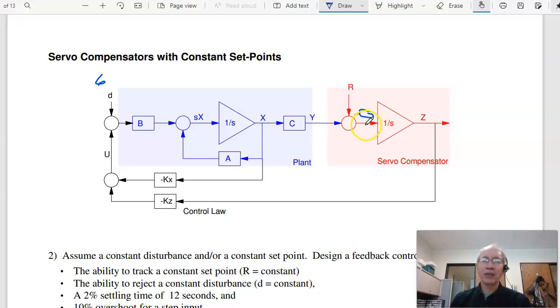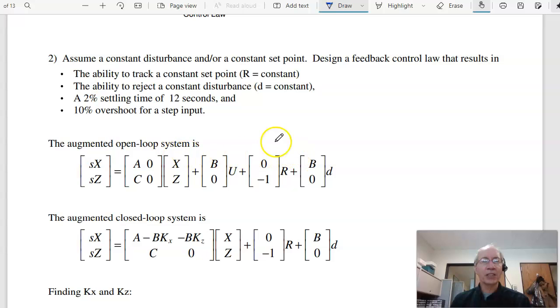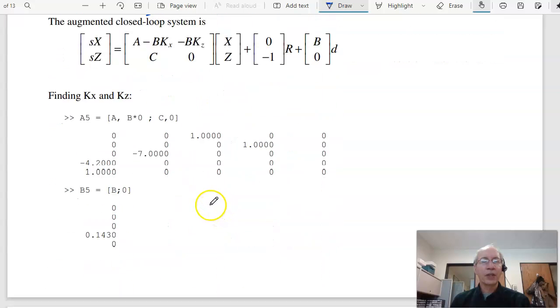If there's a disturbance into the system, this integrates and figures out what I need to cancel the disturbance so that at steady state, the input to the integrator is zero. It's got to be zero because if it's not, if it's positive, I'm integrating up. If it's negative, I'm integrating down. I'm not at steady state. So to do that, I first form the augmented system.